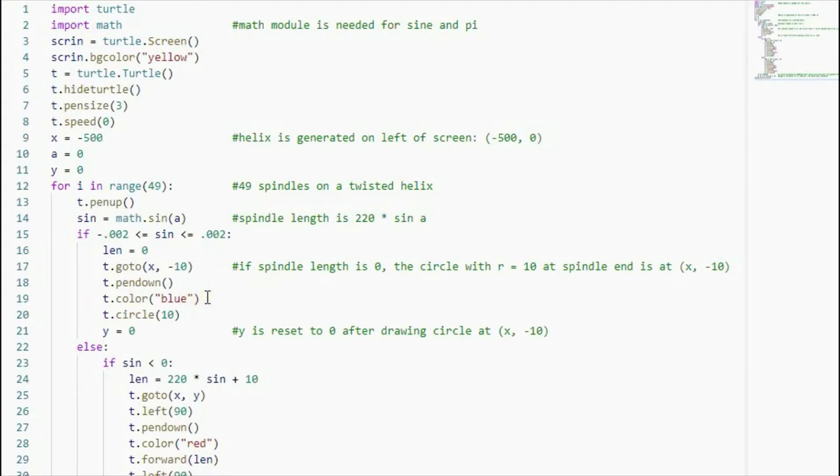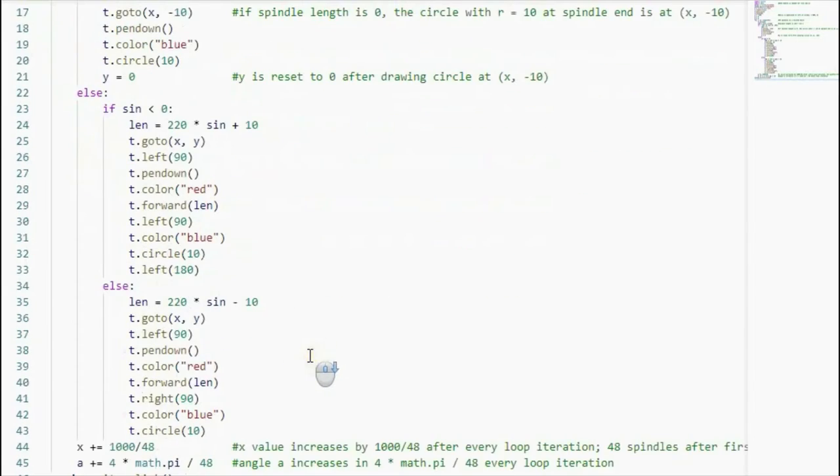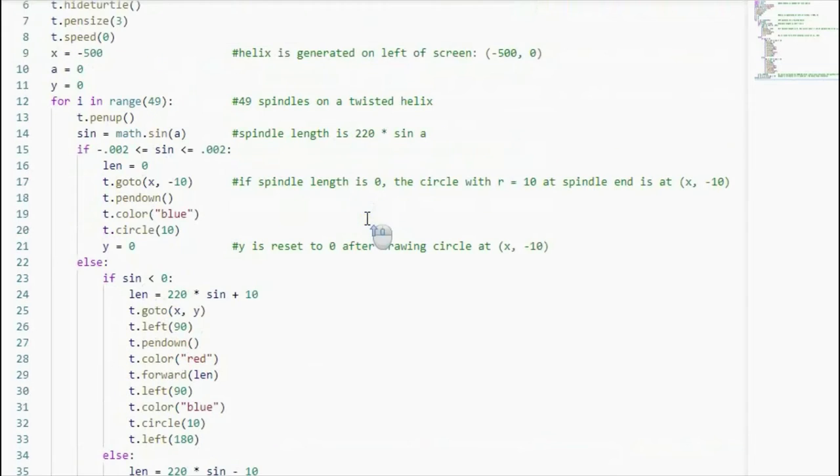And then I have here the loops for three cases of the sine values: if the sine is zero or very close to zero, if the sine is less than zero, and then over here if the sine is greater than zero.